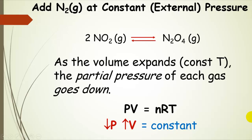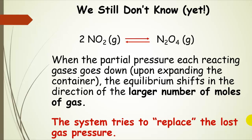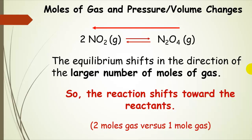So now what happens? When the partial pressure of each reacting gas goes down, the equilibrium is going to try to make up for that, shifting in the direction of the larger number of moles of gas. The system is trying to replace that lost gas pressure — it wants to counteract what we did. So the system shifts toward nitrogen dioxide, toward the reactants, which is two moles of gas versus one mole of gas on the product side.